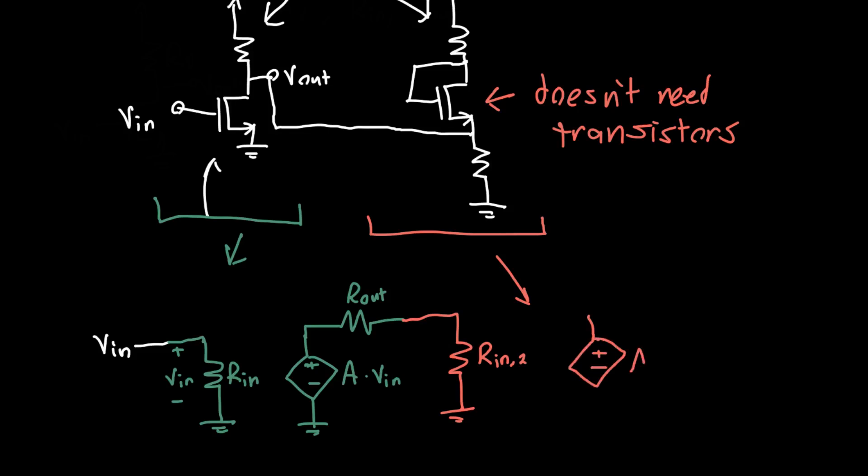It's also got a certain gain, A2 times V_in2, and here V_in2 is the voltage across this resistor. And then we've got some output resistance R_out2, and then some output voltage V_out.